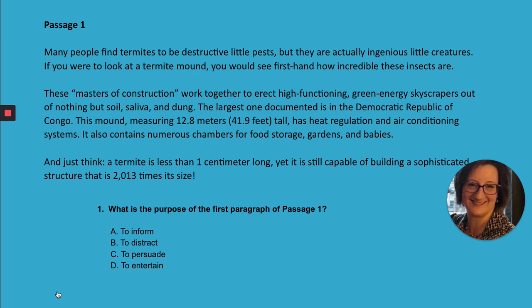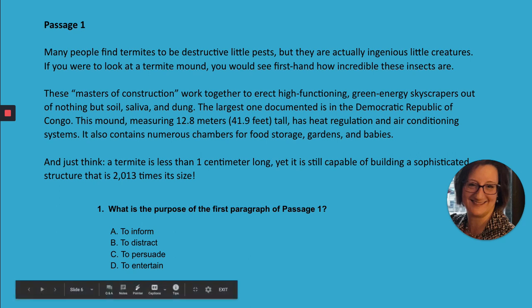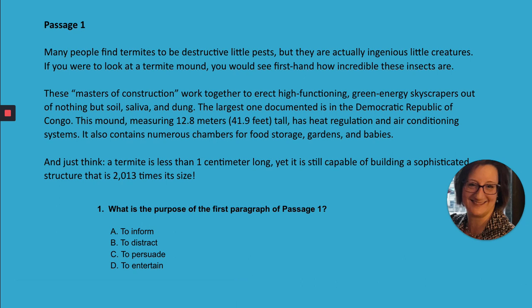So what is the purpose of the first paragraph? In the first sentence there's a big clue — the author starts out by saying termites are destructive little pests, a negative connotation of these critters. Then in the second part he says, 'but they're actually ingenious little creatures.' He's telling me that while most people think they're not really cool, in fact they really are amazing insects. In that very first paragraph, he's actually trying to persuade me that termites are amazing insects even though most people think of them as pests. So I'm going to choose answer choice C — to persuade — and that would be 100% correct.